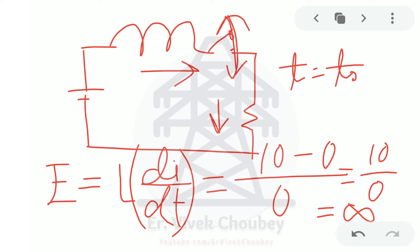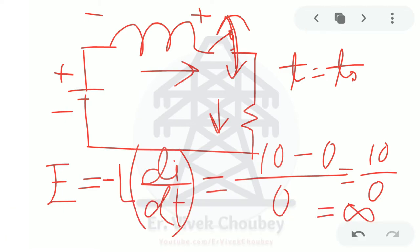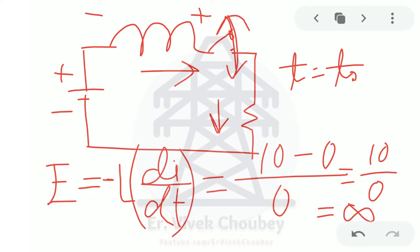By Lenz's law, E = −L·di/dt. The minus sign indicates that the EMF generated across the inductor is in opposite polarity to that of the source voltage. So if the source voltage is plus on one side and minus on the other, the inductor now has the opposite polarity. When an element has polarity opposite to that of the source, it behaves as a source itself — so this inductor now behaves as a voltage source, just like the battery.